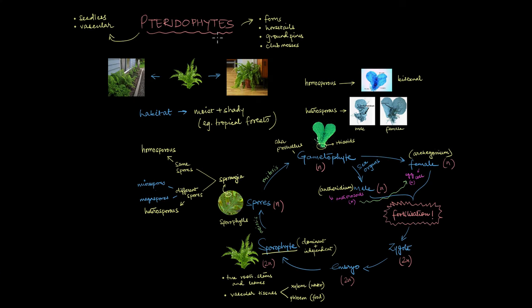To summarize, pteridophytes are kind of like an in-between version of bryophytes and the higher plants. Like bryophytes, pteridophytes are also seedless, they produce spores, and they need water to reproduce. But they also have true roots, stems, and leaves equipped with specialized vascular tissues, just like the higher plants. Pteridophytes also do quite a lot for our environment — they are known to maintain soil health, regulate climate, fix nitrogen, provide habitat to a bunch of different living organisms, and even promote biodiversity. So the next time you spot a fern in the wild, take a closer look at this ancient plant and appreciate the role it plays in our ecosystems.